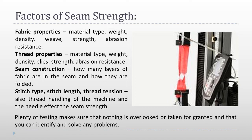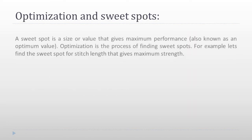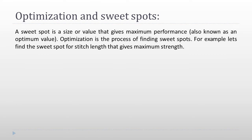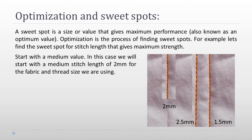Plenty of testing: make sure that nothing is overlooked or taken for granted and that you can identify and solve any problems. Optimization and sweet spots: a sweet spot is a size or value that gives maximum performance, also known as an optimum value. Optimization is the process of finding sweet spots. For example, let's find the sweet spot for stitch length that gives maximum strength. Start with a medium value — in this case, a medium stitch length of 2mm for the fabric and thread size being used.